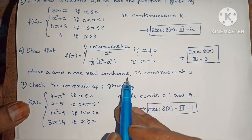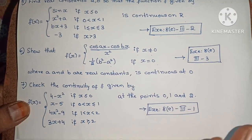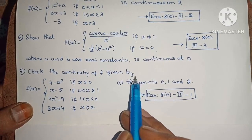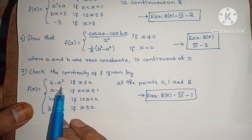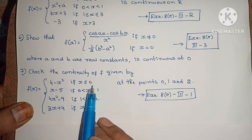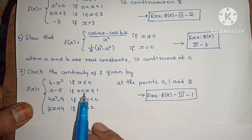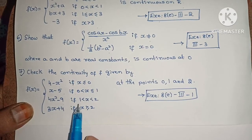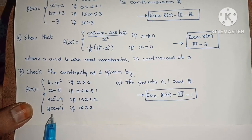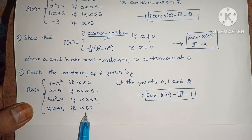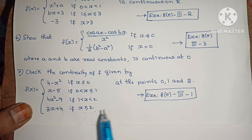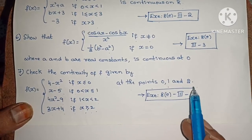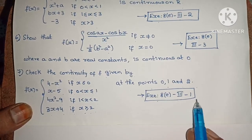Next: Check the continuity of f given by f of x equals 4 minus x squared if x less than or equals to 0; x minus 5 if 0 less than x less than or equals to 1; 4x squared minus 9 if 1 less than x less than 2; 3x plus 4 if x greater than or equals to 2 — at the points 0, 1, and 2. Exercise 8d, third roman law, first one.